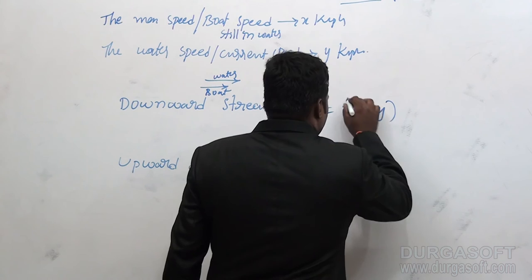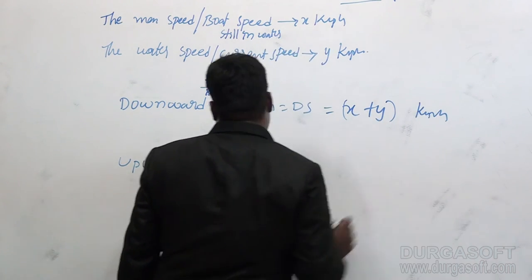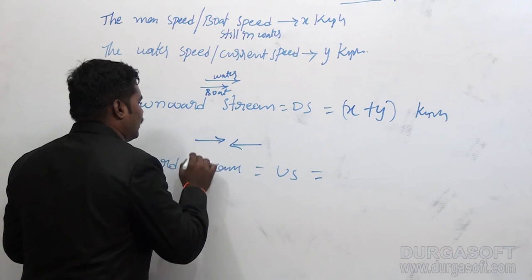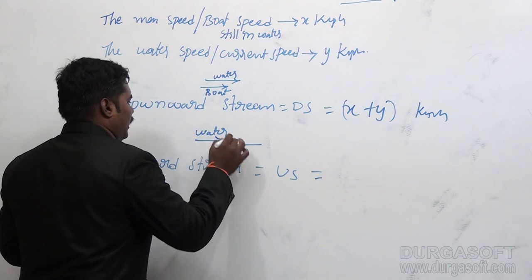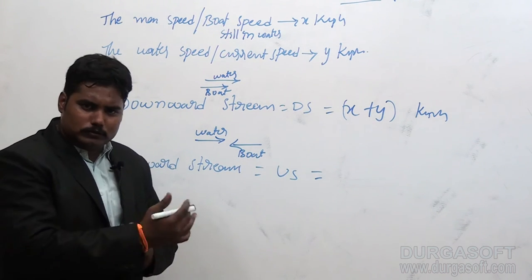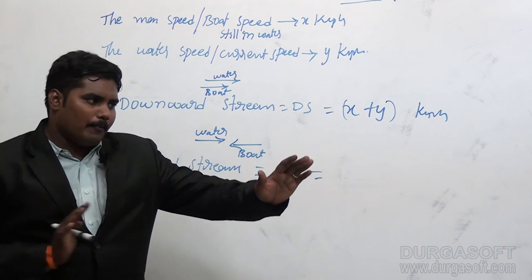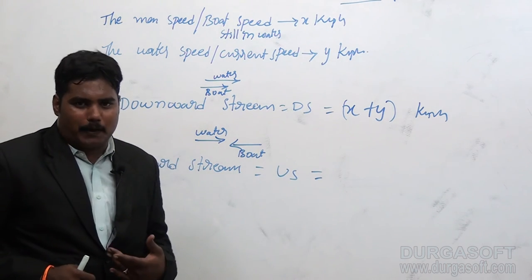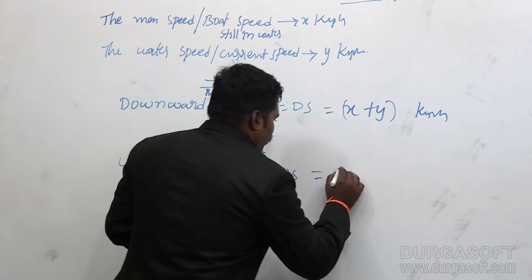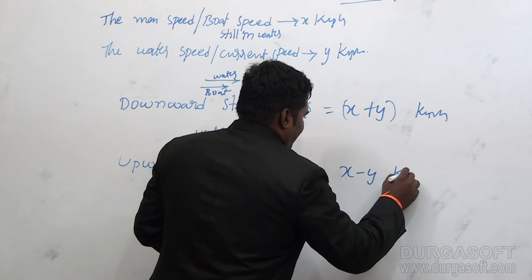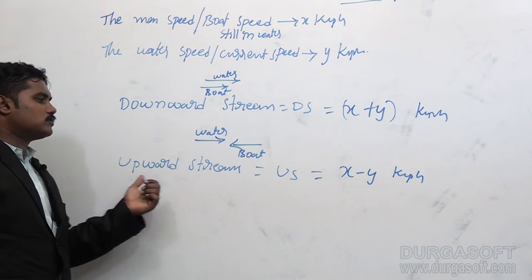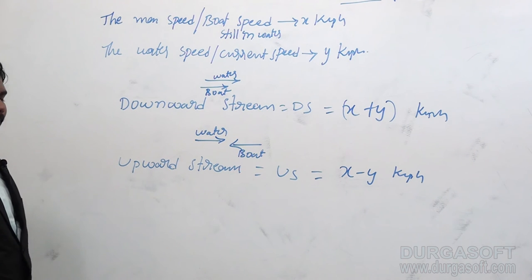Downstream speed = x + y km/h. Upstream means moving opposite to the water direction — water opposes the movement, reducing the man's speed. So upstream speed = x − y km/h.